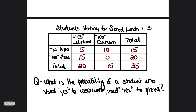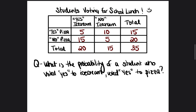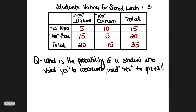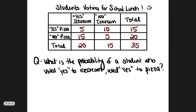Let's do another problem together. If you're hanging with me, stay tuned until the end because I'm going to tell you how one of you can earn a free tutoring session for an entire hour so we can practice and study together for your upcoming placement test. The next question uses the same chart, but we're learning to use it in different ways because these types of charts can be confusing. What is the probability of a student who voted yes to ice cream also voted yes to pizza?